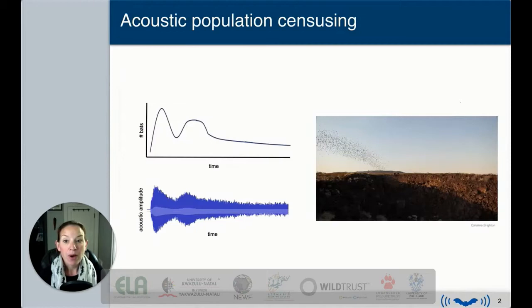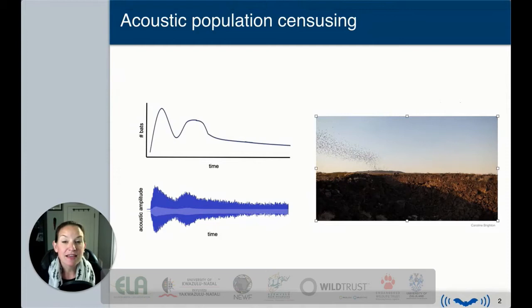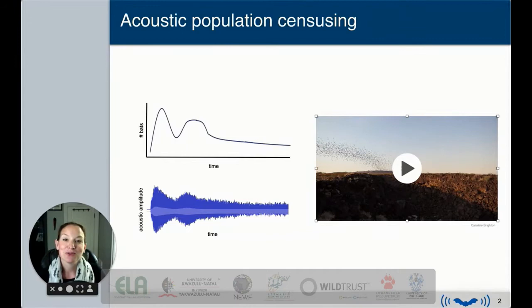What we have found is that if you look at a recording of bats leaving a cave, such as in this video here, the overall acoustic stream amplitude scales with the number of bats emerging in a given period of time. So when there are more bats, the acoustic amplitude is louder.